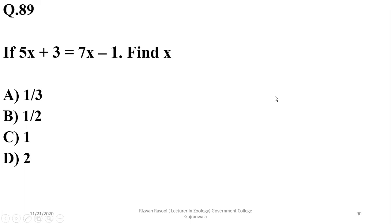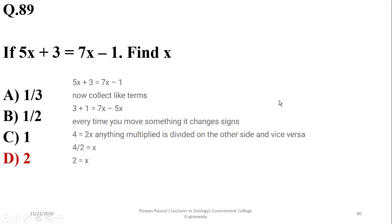If 5x + 3 = 7x − 1, find x. Collecting like terms: 3 + 1 = 7x − 5x, so 4 = 2x, therefore x = 4/2 = 2. These are simple algebraic and mathematical questions.